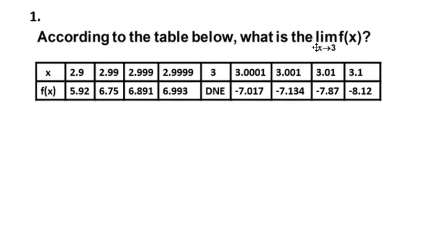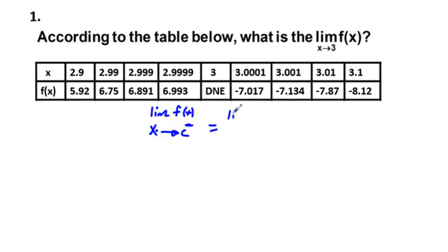Problem one: according to the table below, what is the limit as x approaches 3 of f of x? For a limit to exist, the limit as x approaches c from the left has to equal the limit as x approaches c from the right. So we look at the table to see if a number is being approached from both sides.